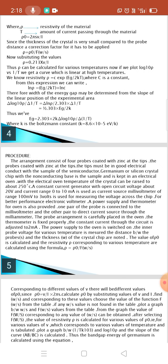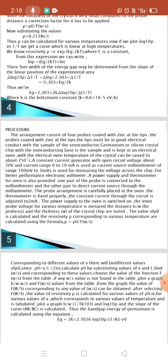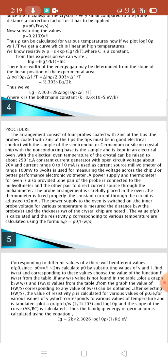Therefore, the width of the energy gap may be determined from the slope of the linear portion of the experimental area. Delta log10 rho is equal to delta ln rho by 2.303 into delta 1 by T, equal to 1 by 2.303 into Eg by 2K. Thus, we have Eg is equal to 2.303 into 2K delta log10 rho by delta 1 by T, where K is the Boltzmann constant.